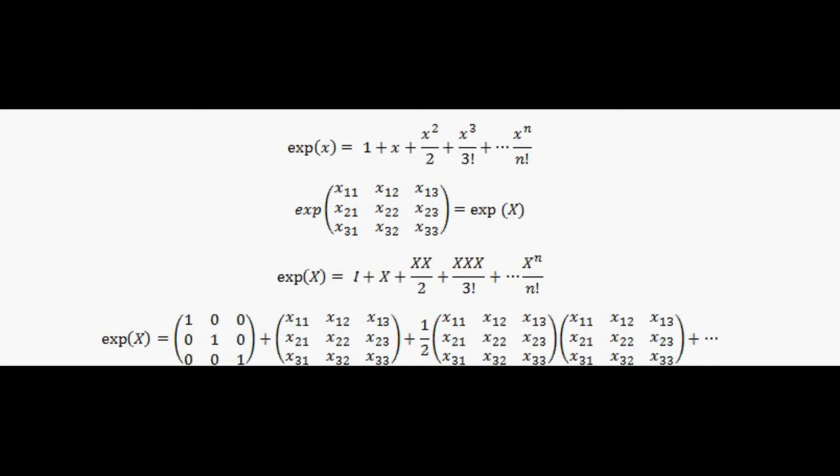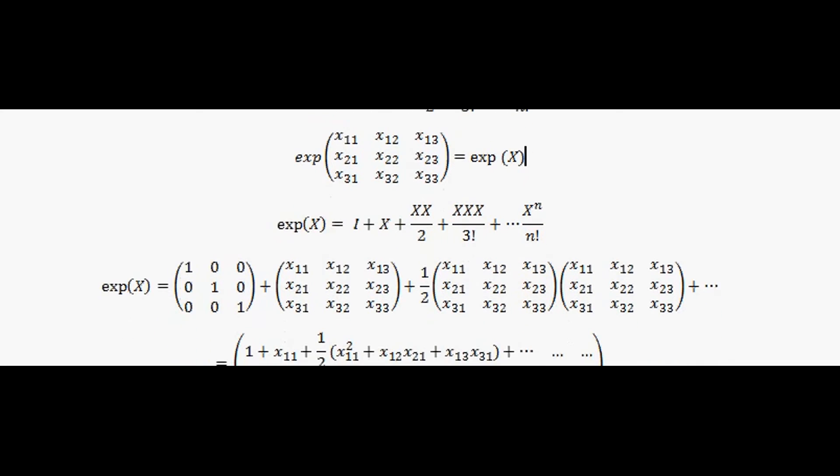Okay. So, I'm going to do that. So, the exponential of the matrix is equal to the identity matrix, in this case a three by three matrix, plus itself, which is just what I started off with, plus half of the matrix that I started off with multiplied by the matrix I started off with. And remember, this is matrix multiplication, plus a load of other terms.